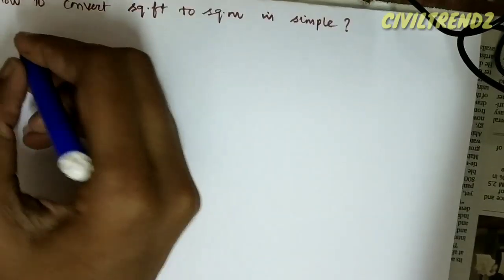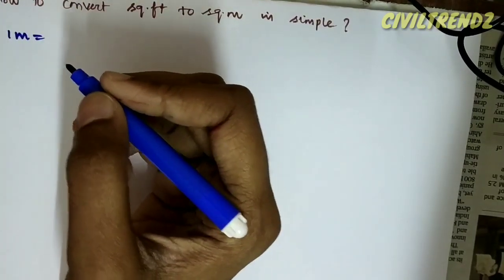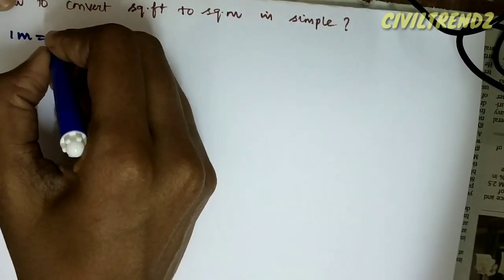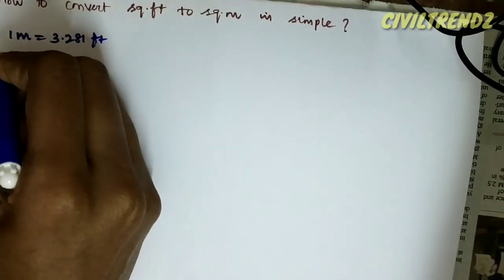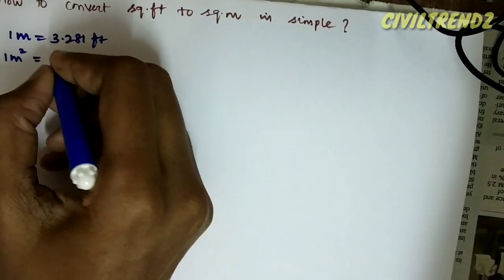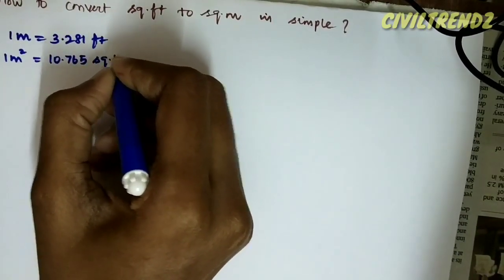I have obtained the power of 1 meter equal to 3.281 feet. 1 meter square equal to 10.765 square feet.